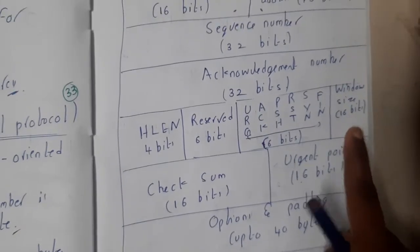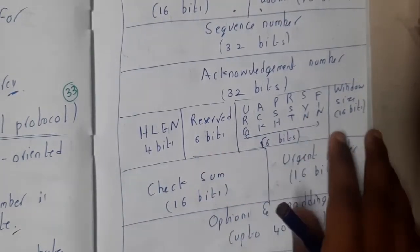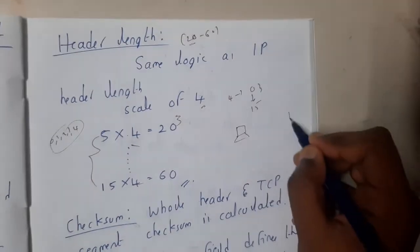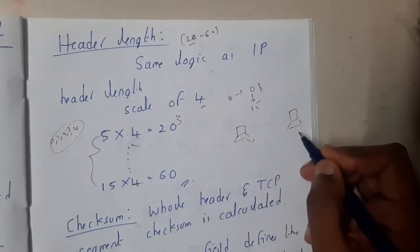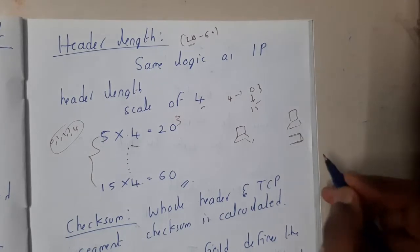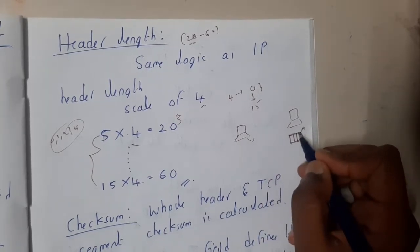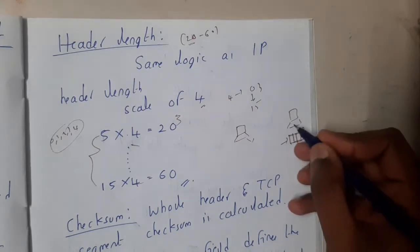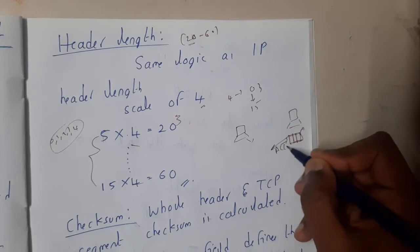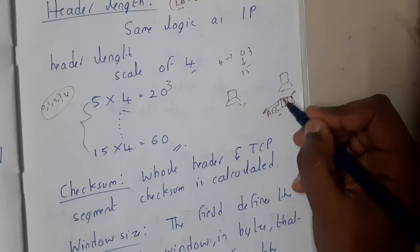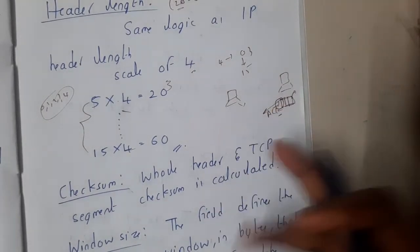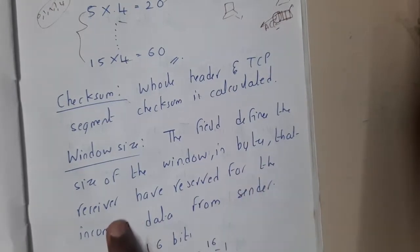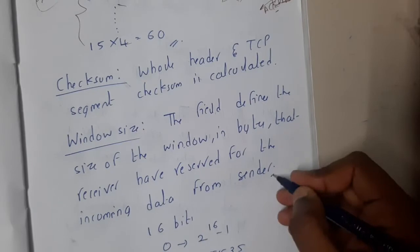Now we have the window size. Whenever a connection is established, assume you are the sender and there is a receiver. When you send data, the receiver has a buffer where it stores incoming data. That buffer slowly fills up and packets are taken from it one by one. When the receiver sends an acknowledgement, it also reports the window size — indicating how many buffer slots are free. Based on that, the sender decides how much data to send. So the window size field defines the size of the receiver's buffer reserved for incoming data.